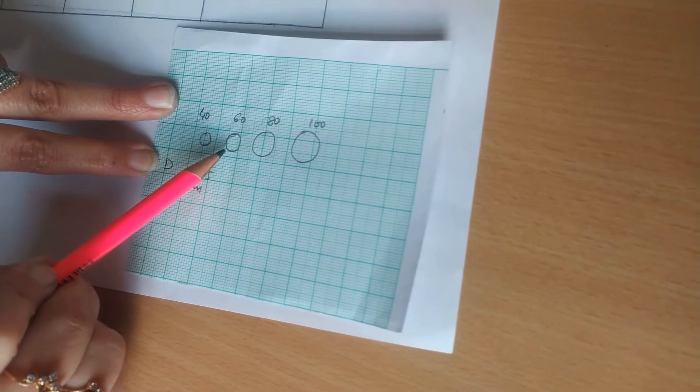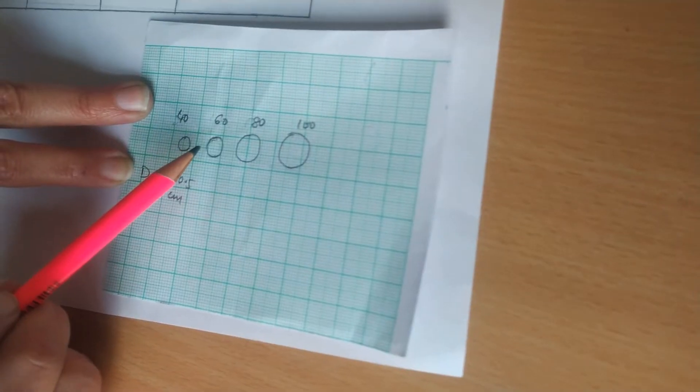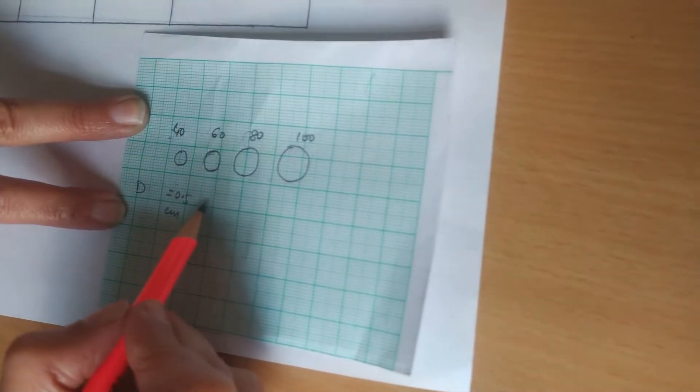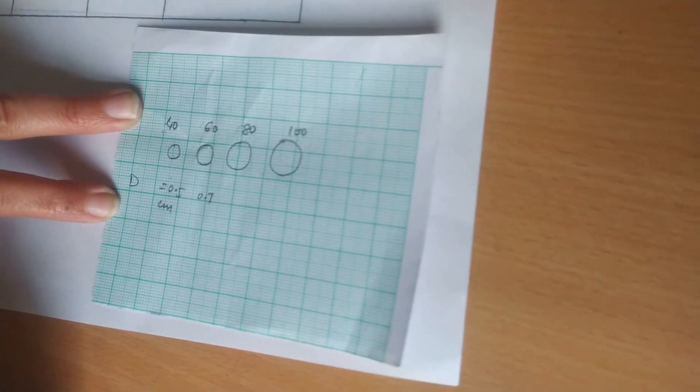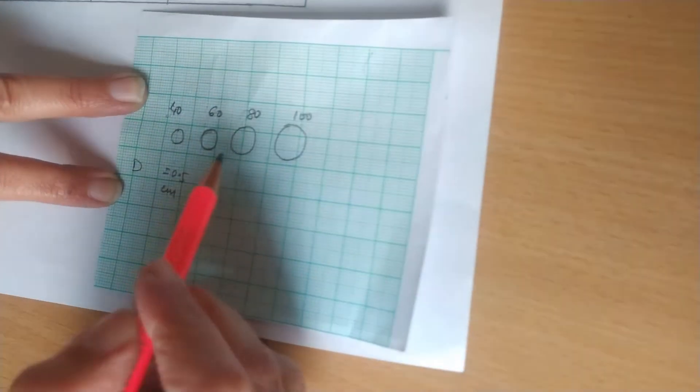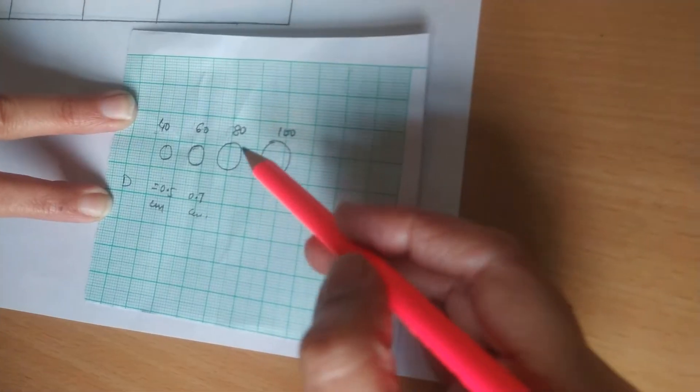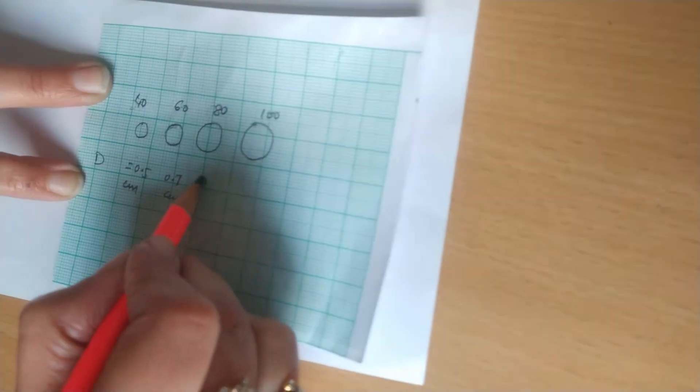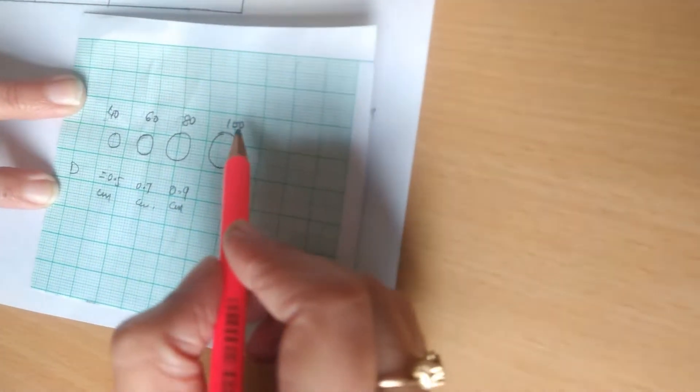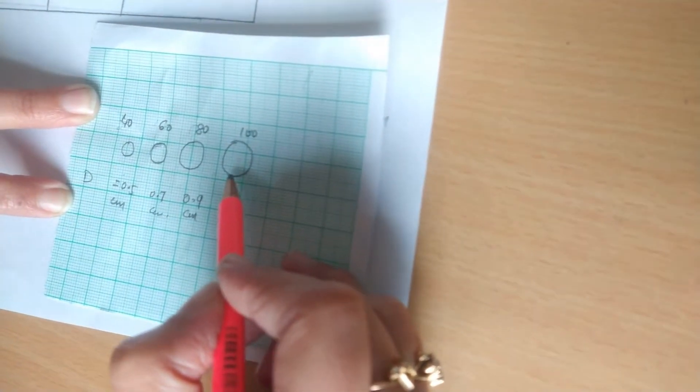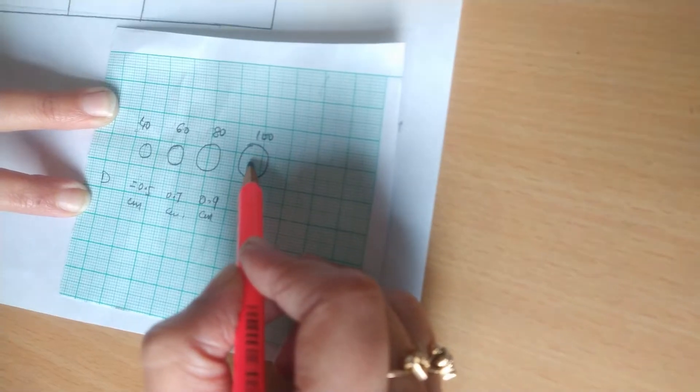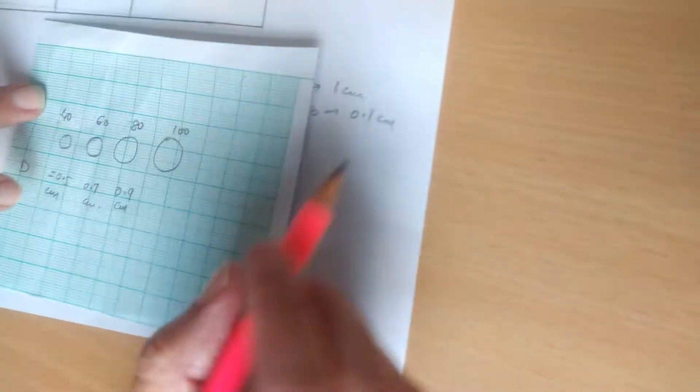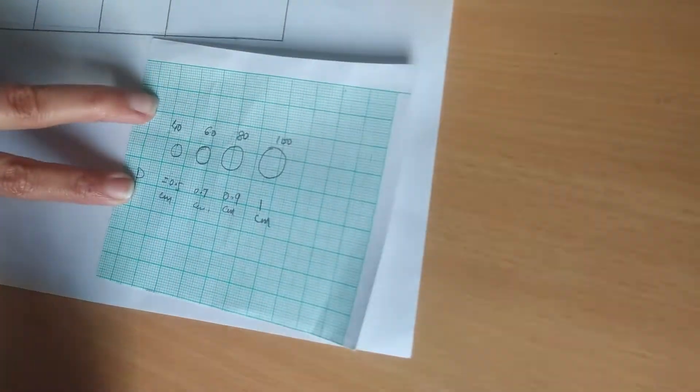Similarly for 60 cm when the distance is 60 cm, the boxes are 1, 2, 3, 4, 5, 6, 7, so it is 0.7 cm diameter. For 80 cm we have 1, 2, 3, 4, 5, 6, 7, 8, 9 boxes, so 0.9 cm. And at 100 cm, 1, 2, 3, 4, 5, 6, 7, 8, 9, 10 boxes, which is 0.1 times 10, so 1 cm.